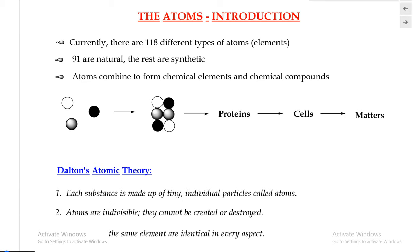So currently, there's 118 different types of atoms, and we can also refer to them as 118 different elements that exist in our world right now. Of all of them, only 91 are natural, and the rest are synthetic.